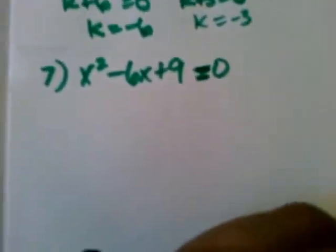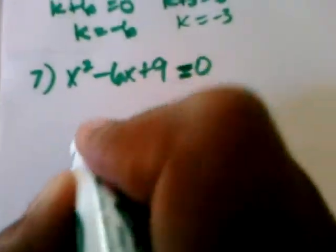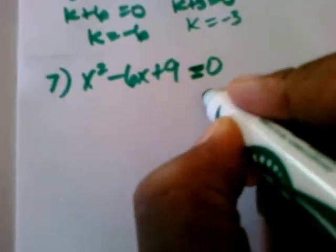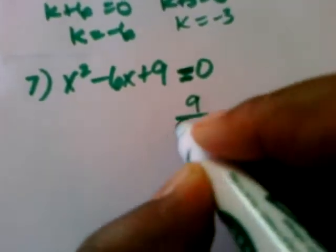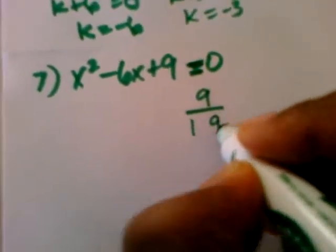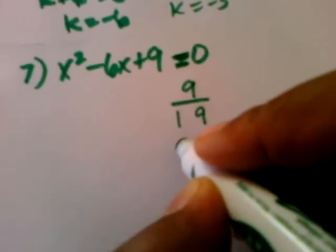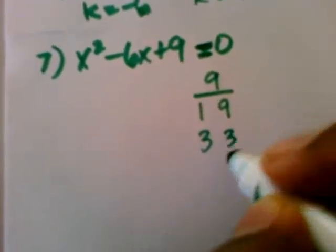Let's take a look at number 7. In number 7, I'm going to find the factors of a positive 9. And when I add them together, I get a negative 6. 1 times 9 is 9. 3 times 3 is 9.